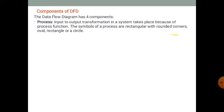Input-to-output transformation in a system takes place because of the process function. The symbol of a process is a rectangle with rounded corners, or a circle. Data input and output transformation is represented as a process function.